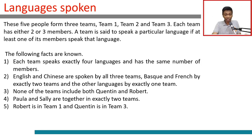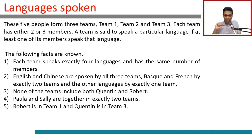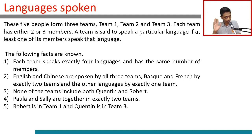These 5 people form 3 teams: T1, T2, and T3. Each team has either 2 or 3 members, but they definitely overlap across teams. A team is said to speak a particular language if at least one of its members speaks that language. Each team speaks exactly 4 languages and has the same number of members.